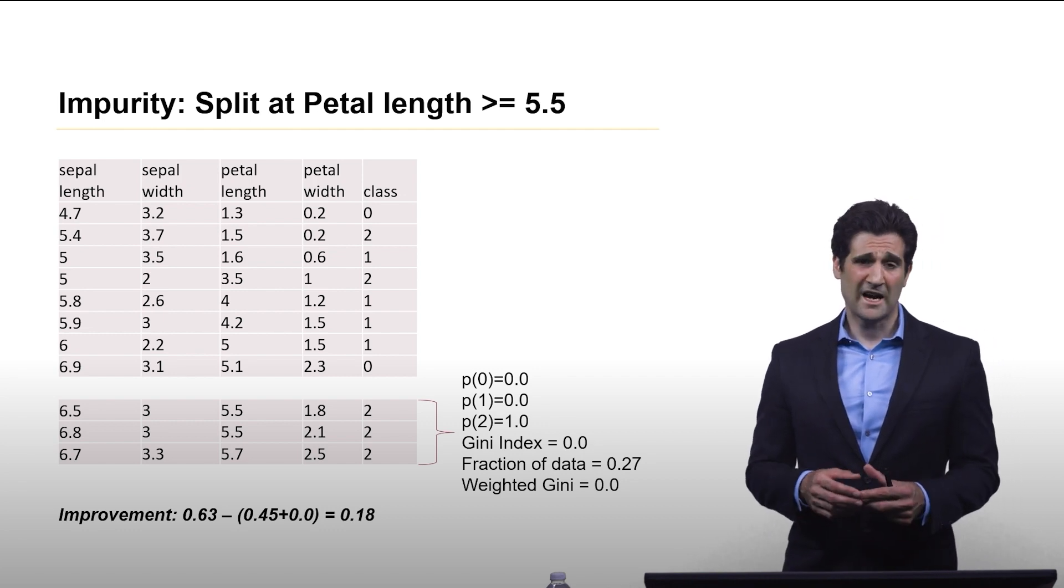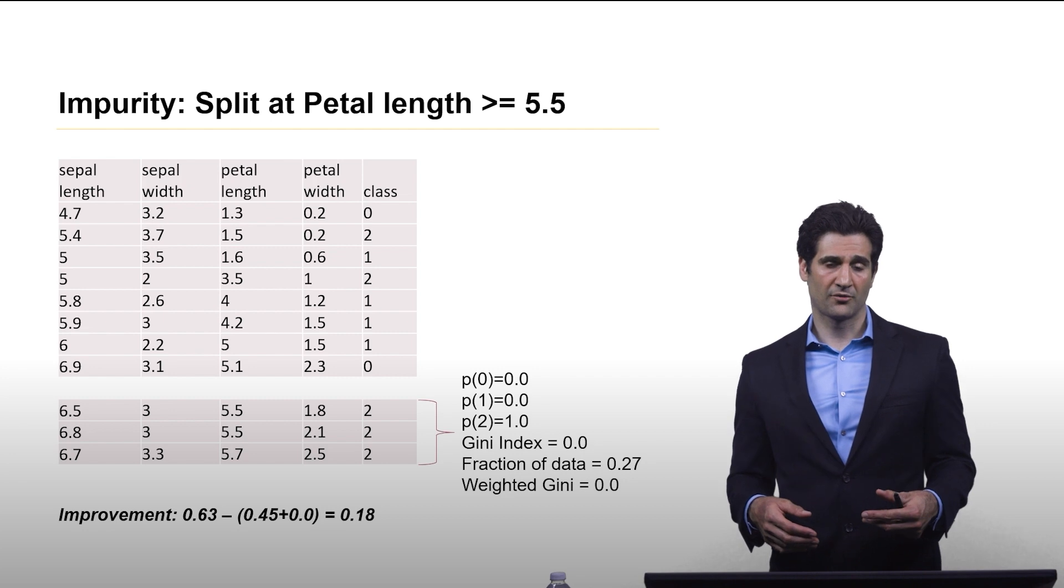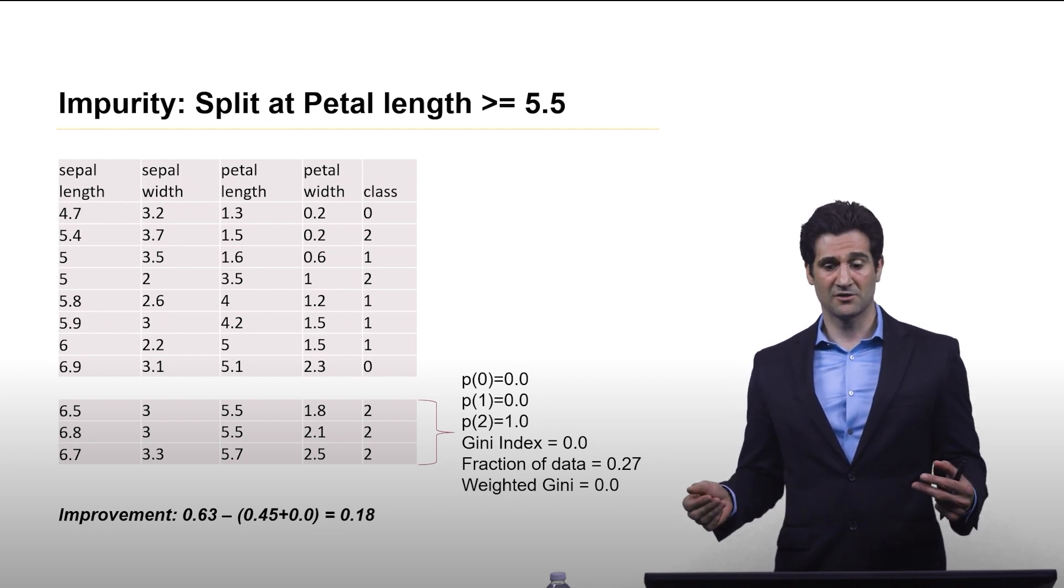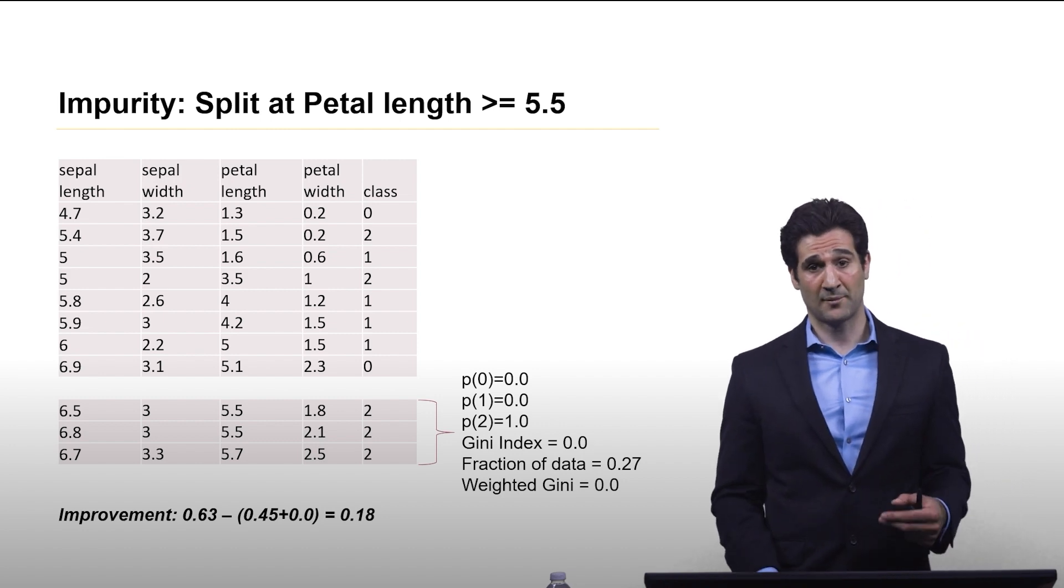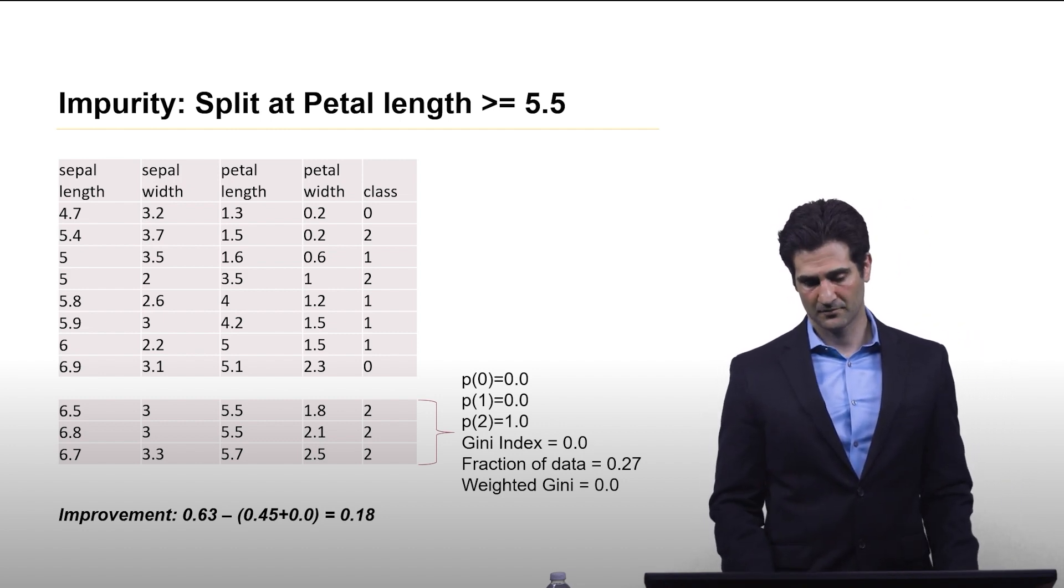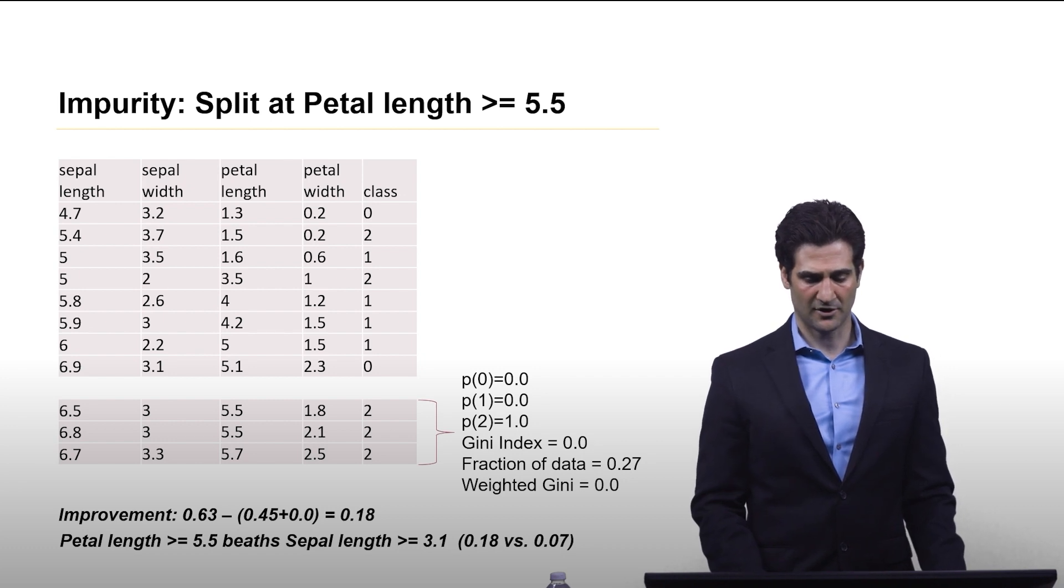So what will happen at each split of the decision tree, the algorithm will look through all thresholds and all features and evaluate them, and it's going to greedily select which one gives it the greatest drop at a given node. And again, here, petal length of 5.5 beats the sepal length of 3.1.